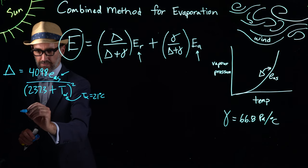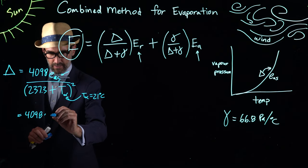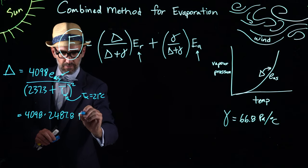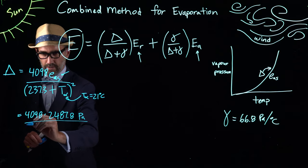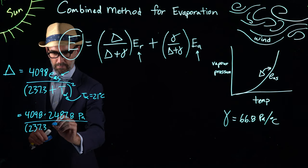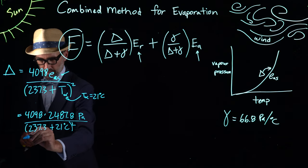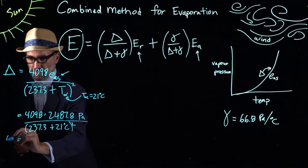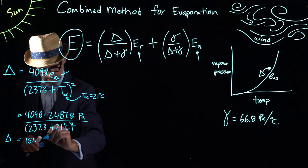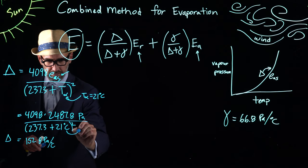We can substitute that in, so we have 4098 multiplied by 2487.8 pascals divided by 237.3 plus 21 degrees C all squared, which results in delta of 152.8 pascals per degree C.